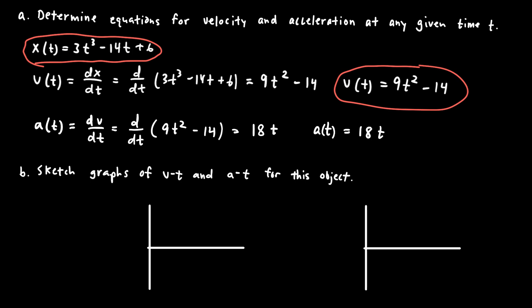We now have our position, velocity, and acceleration time equations, which will be used in the subsequent parts. Part B asks us to sketch graphs of velocity and acceleration as a function of time. I'll label the axes v(t) and a(t) for the two graphs. For the velocity-time graph, I'll use the equation v equals 9t squared minus 14.